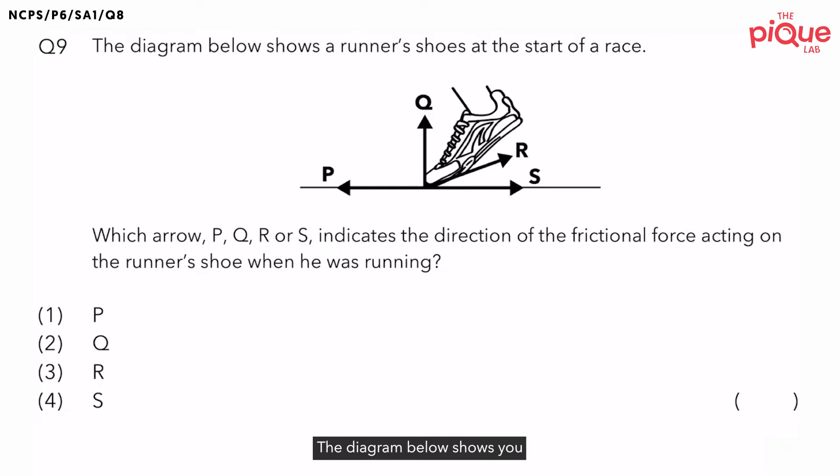Question 9. The diagram below shows a runner's shoes at the start of a race. Now, they ask which arrow P, Q, R or S indicates the direction of frictional force acting on the runner's shoe when he was running.